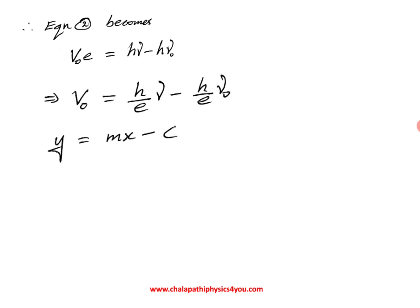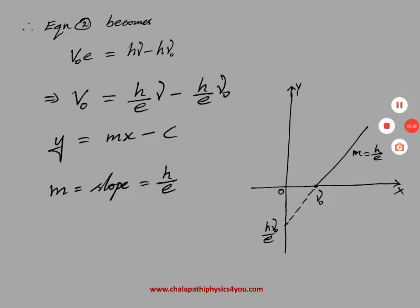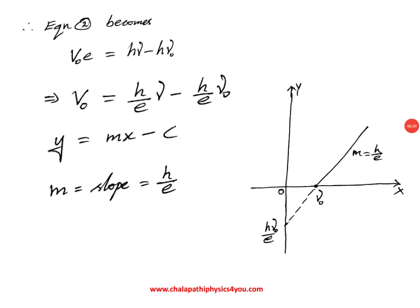This equation indicates a straight line equation: y = mx - c. Comparing, the slope of the straight line is h/e, and the negative intercept value is (h/e)ν₀. Experimentally studying this gives the same straight line equation. Einstein's theoretical equation also gives the same straight line equation — this is the greatness of Einstein's theory. This is about Einstein's photoelectric equation.